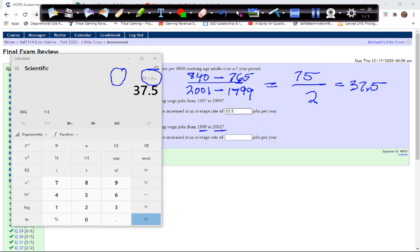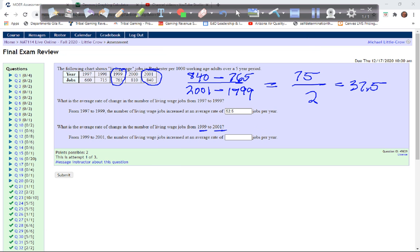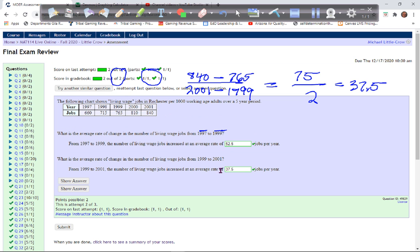And that's what we'll put in there. Finding slope or average rate of change is just finding slope. Take the two points, find the change in y over the change in x.